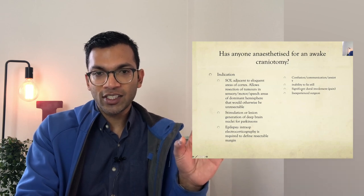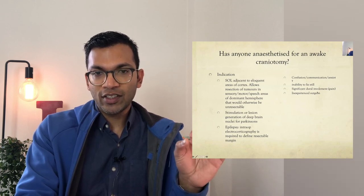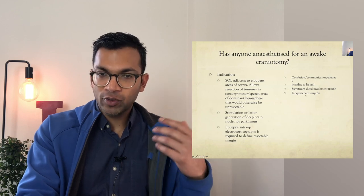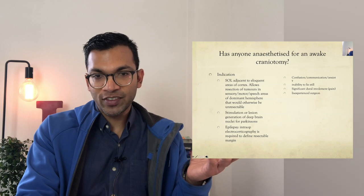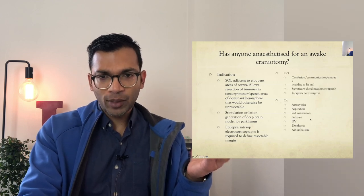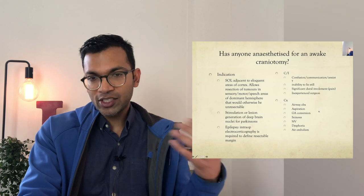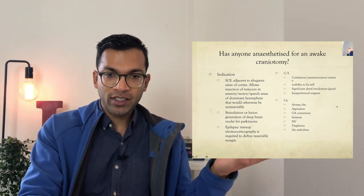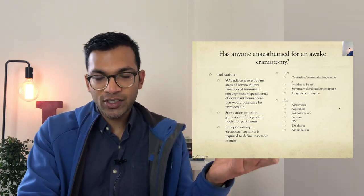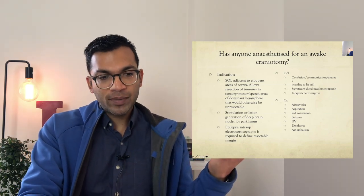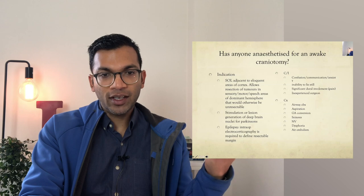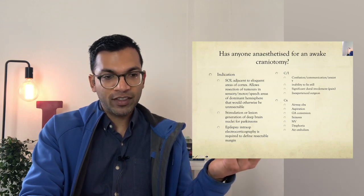Contraindications: confusion, communication, anxiety. These are obviously some contraindications: inability to lie still, significant dural involvement so there'll be quite a lot of pain, and maybe an inexperienced surgeon would be another relative contraindication. Complications: always airway obstruction, aspiration, conversion to GA can be quite a difficult thing to do in certain positions, seizures, nausea, vomiting, dysphoria, air embolism as well. So a lot of things can go wrong so again a very experienced team is vital for this.